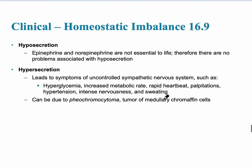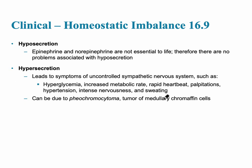Regarding clinical imbalance: hyposecretion of catecholamines usually causes no problems, but hypersecretion can be very serious. An uncontrolled sympathetic nervous system can lead to hyperglycemia, increased metabolic rate, rapid heartbeat, and palpitations. This can be due to a tumor in the adrenal medulla called a pheochromocytoma.